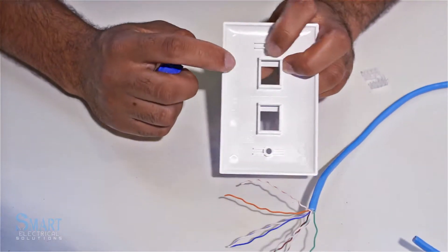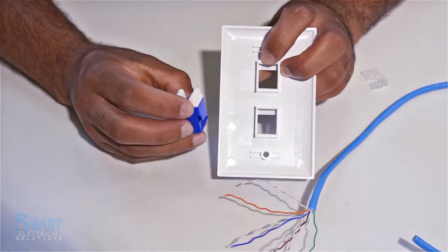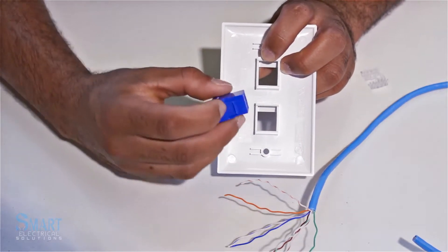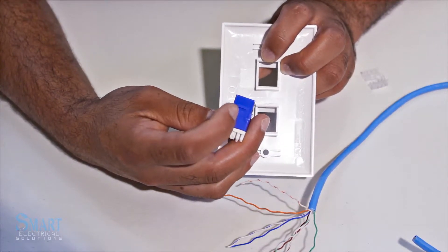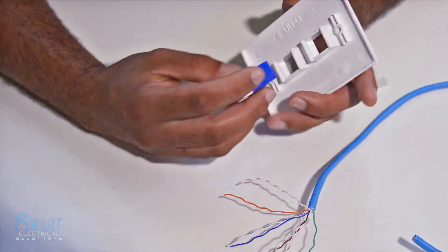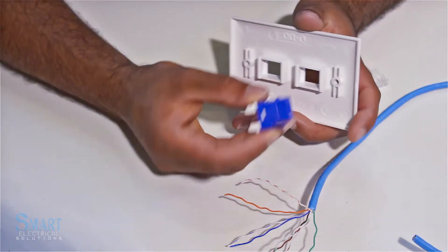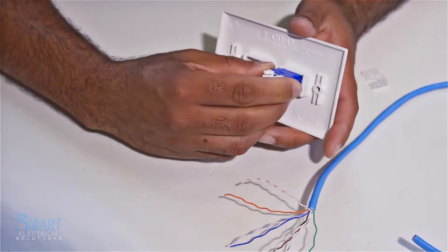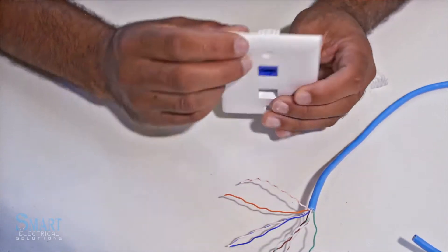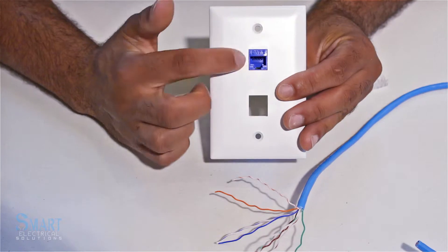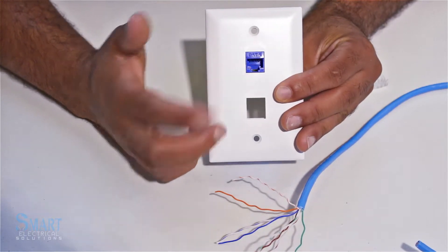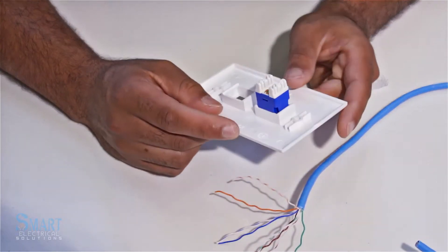You start with the bottom part first and then the top, and it just snaps in place. You can buy these plates in single, double, and even more connectors. Now we're going to start making the connections.